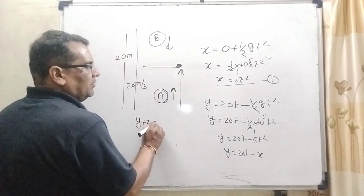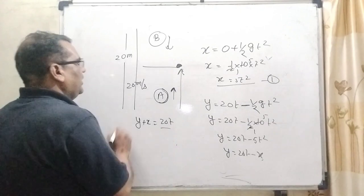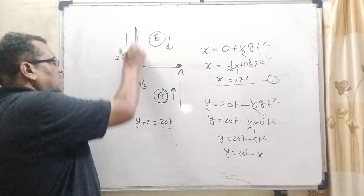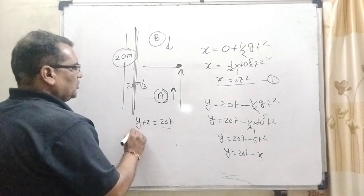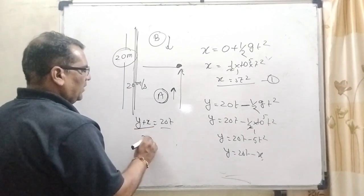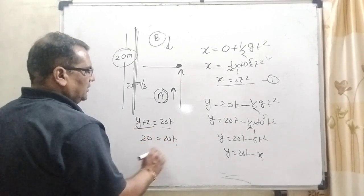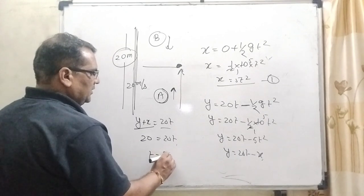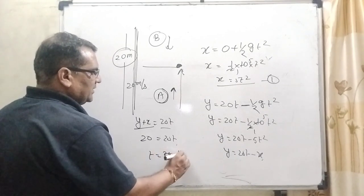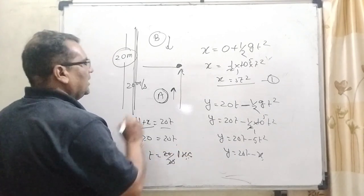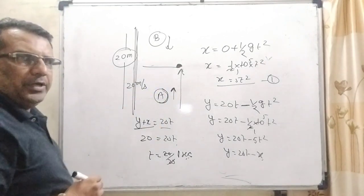So therefore, y plus x equal to 20 t. But we can see that the whole distance is 20 meters. So in place of x plus y, we can put 20. Then time is 1 second. After 1 second, they will collide.